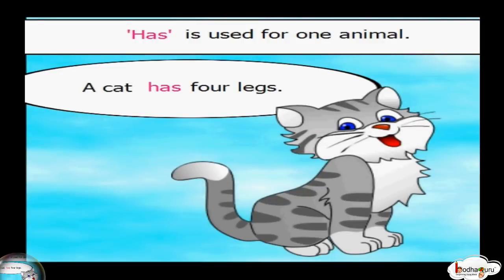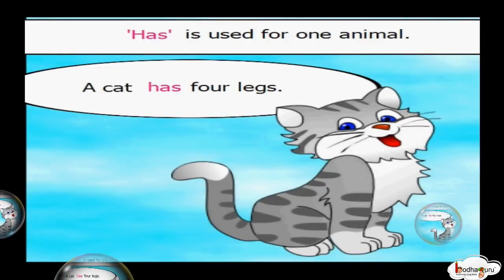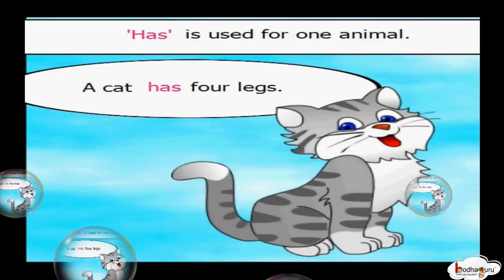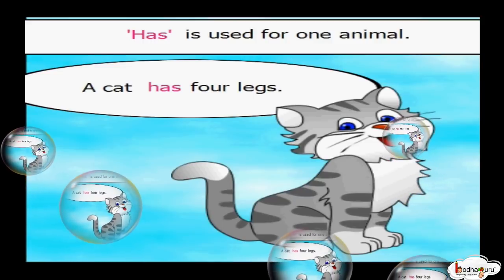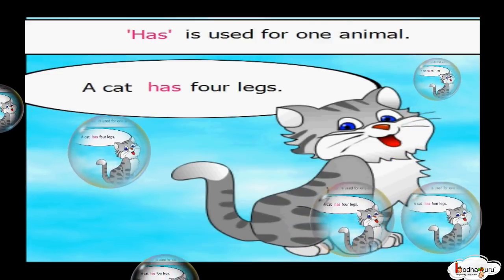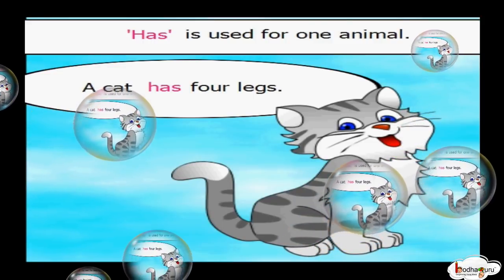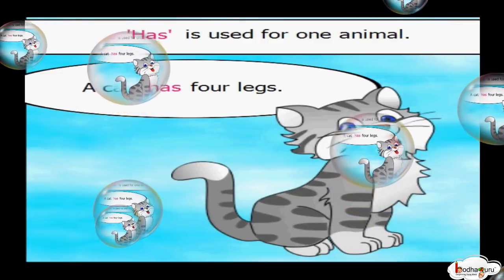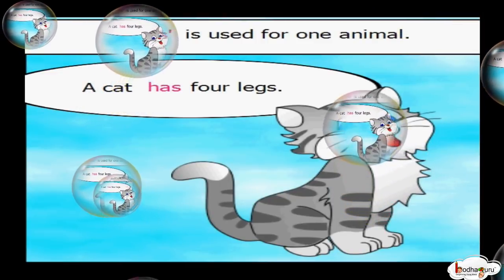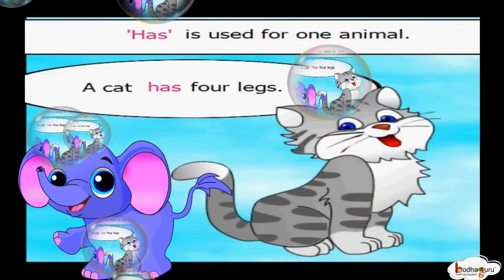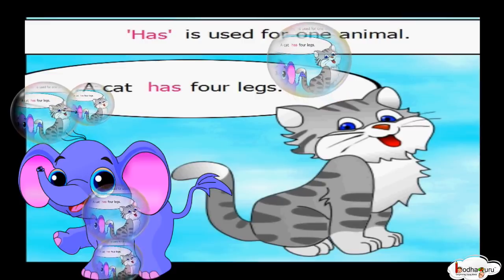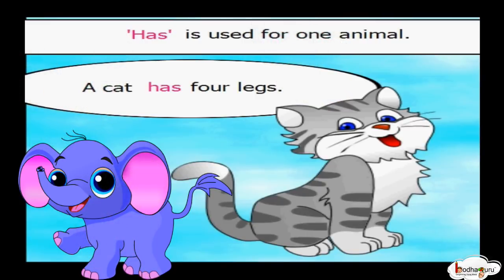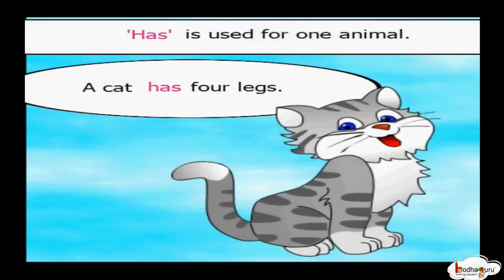A cat has four legs. 'Has' can be used with the name of an animal. A cat means one cat. An elephant has a trunk. 'Has' is used when we talk about what an animal has.